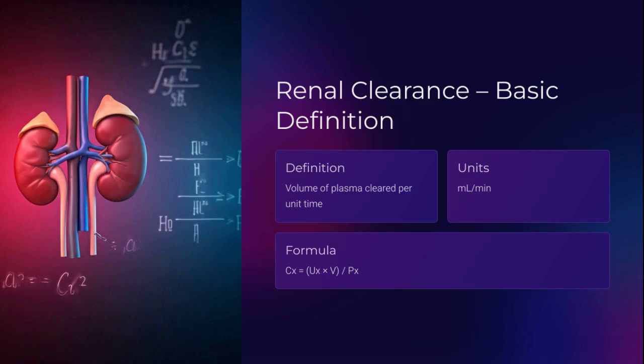Renal clearance tells us how efficiently kidneys remove a substance from plasma. Measured in milliliters per minute, the formula is: CX = (UX × V) / PX, where UX is urine concentration, V is urine flow rate, and PX is plasma concentration. This isn't just a calculation — it's your window into how the kidneys are handling any solute.